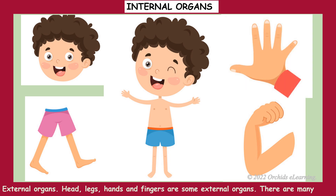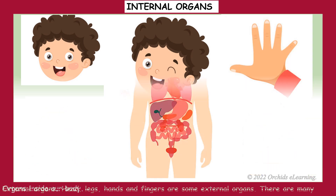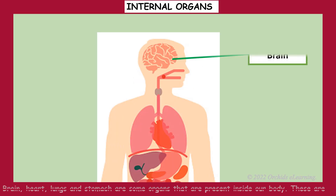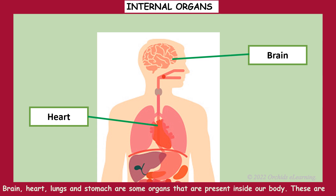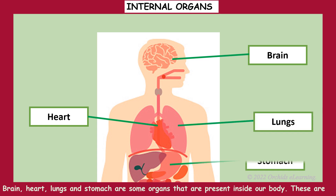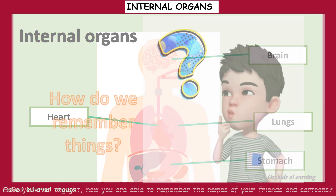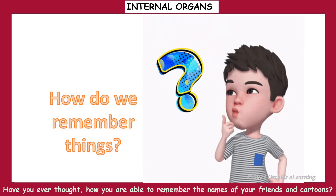Head, legs, hands, and fingers are some external organs. There are many organs inside our body. Brain, heart, lungs, and stomach are some organs that are present inside our body. These are called internal organs.